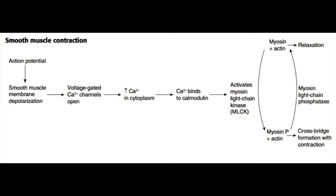In order to stop the contraction, a molecule called myosin light chain phosphatase will remove the phosphate from the myosin. You'll have a naked myosin without a phosphate on it, and that naked myosin is less likely to interact with actin, so you will get relaxation of the smooth muscle.